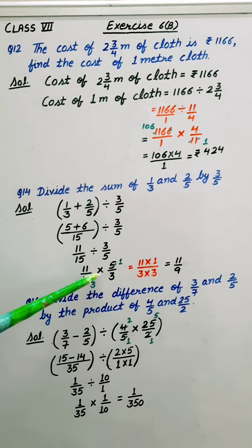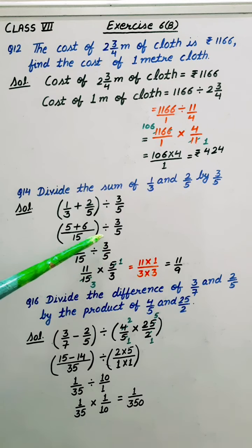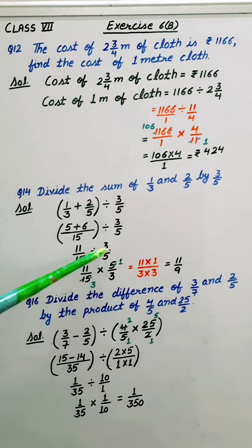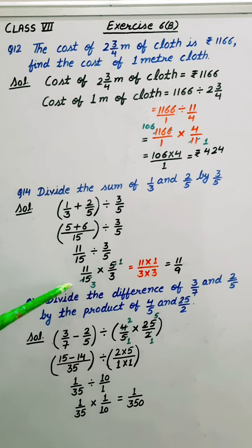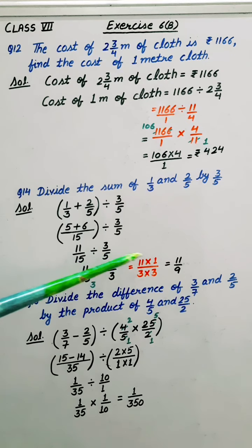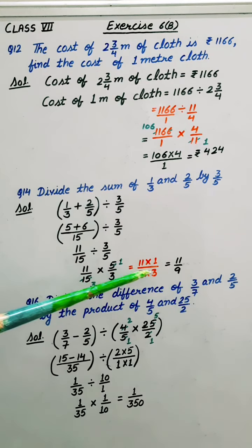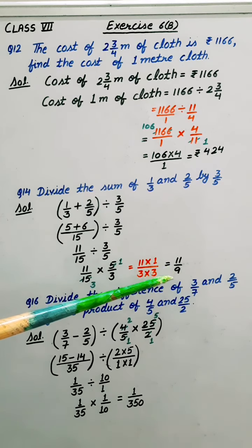Divide changes into multiply and for that we have to write the reciprocal of this. So 5 upon 3. Reducing these numbers. 5 into 1 is 5, 3 into 5 is 15. So answer is 11 multiplied by 1 and down 3 into 3. So it is 11 by 9.